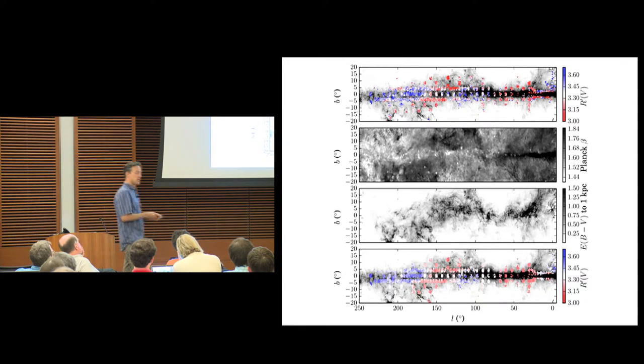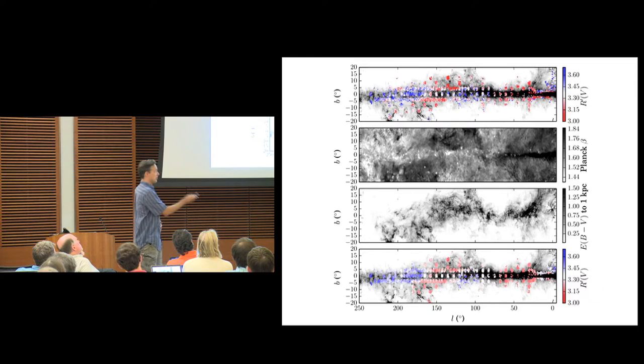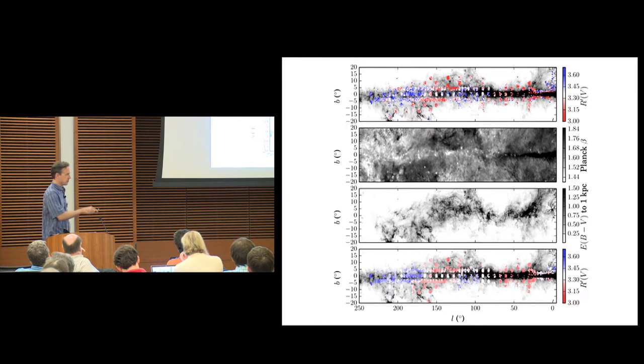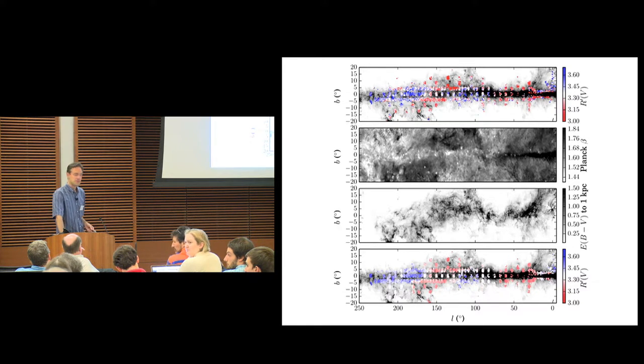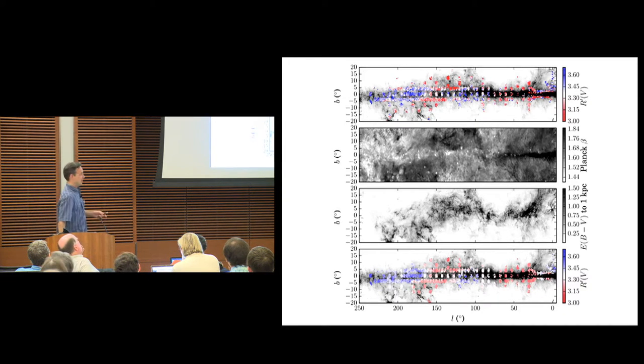There's another interesting correlation. This is Planck beta. So if you model the emission observed by Planck from the dust as frequency to the beta times blackbody, this is the beta. So ignore the galactic plane where things are confusing. Just look at high latitude: dark, dark, dark, dark, light, light. Where there's more of this nearby low RV dust, Planck beta seems to be systematically different. And indeed there's a correlation that we show in one of our other papers just in general between RV of dust on a line of sight and Planck beta. And it's a noisy correlation, but it's not that bad. Is it the opposite of what you would expect if it were grain growth? I think so, which is puzzling. We can come back to this if you like, but that's an interesting mystery.